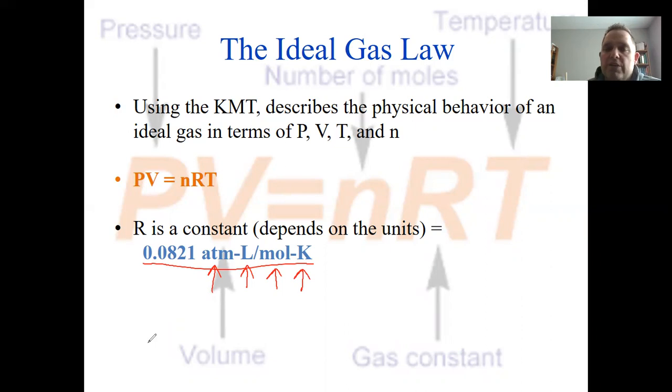This constant, you can find in different units, but for us, we are going to use this as our constant. I will refer back to this a lot. Notice that to use this number, we need to be in ATM. We need to be in liters. We need to be in moles. And our temperature has to be in Kelvin. I would write that on the side of my sheet of paper. Most of the homework already has it on there, and I believe it's also on the back of your periodic tables.